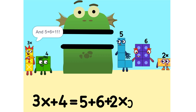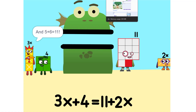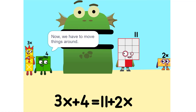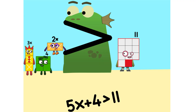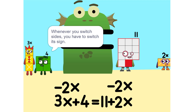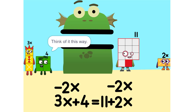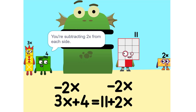And 5 plus 6 is 11. Now we have to move things around — we have to move this 2x to this side. So 5x. Whenever you switch sides, you have to switch its sign. So if it's positive, it becomes negative and vice versa. Why? Think of it this way: you're subtracting 2x from each side.